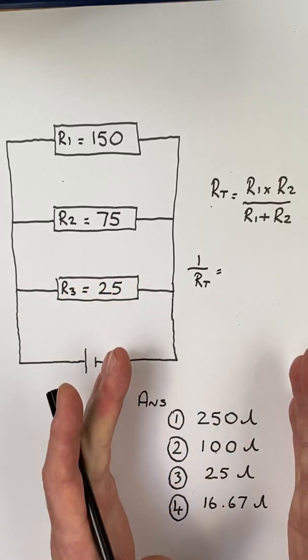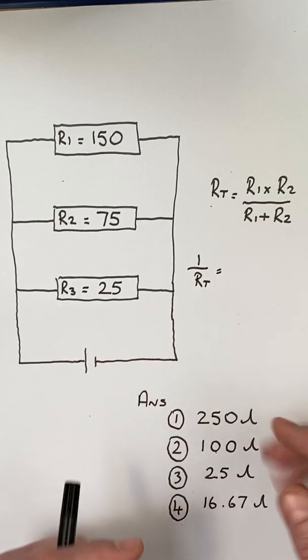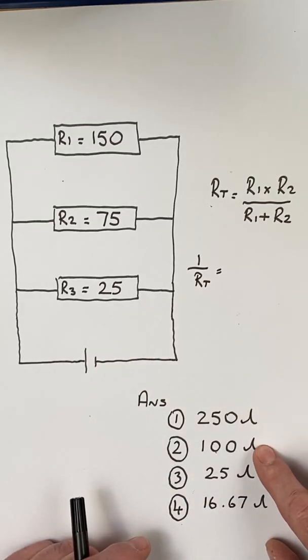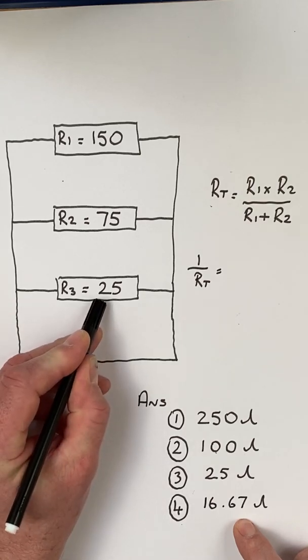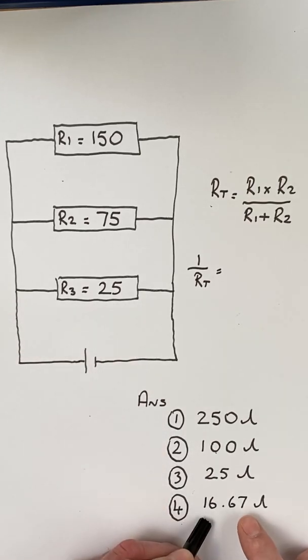We look at the question and the possible answers. We've got 250 ohms, 100 ohms, 25 ohms, and only one answer is less than 25. Therefore, 16.67 ohms is the correct answer in a multi-choice exam.